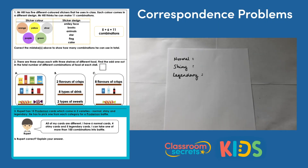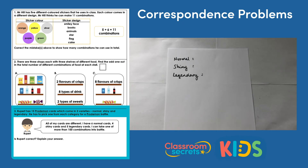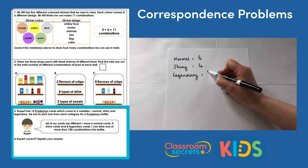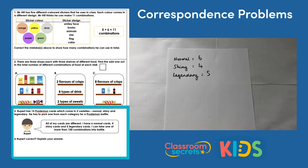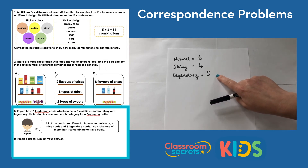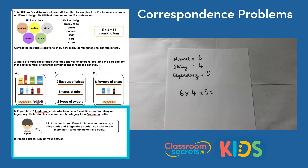Question three: Rupert has 15 pro demon cards which come in three varieties — normal, shiny, and legendary. He has to pick one from each category for a pro demon battle. Rupert says all of his cards are different: he has six normal cards, four shiny cards, and five legendary cards. He claims he can take one of more than 100 combinations into battle. We can check this by doing the multiplication: 6 times 4 times 5.